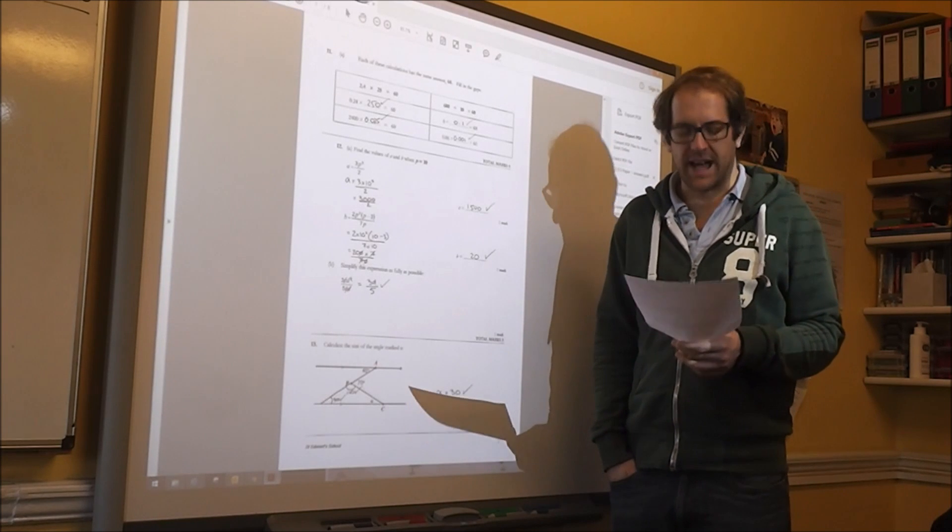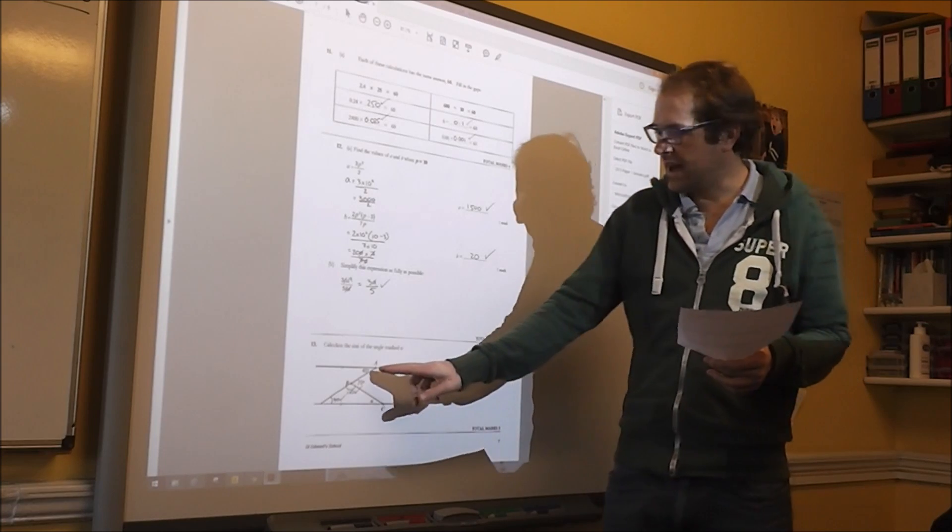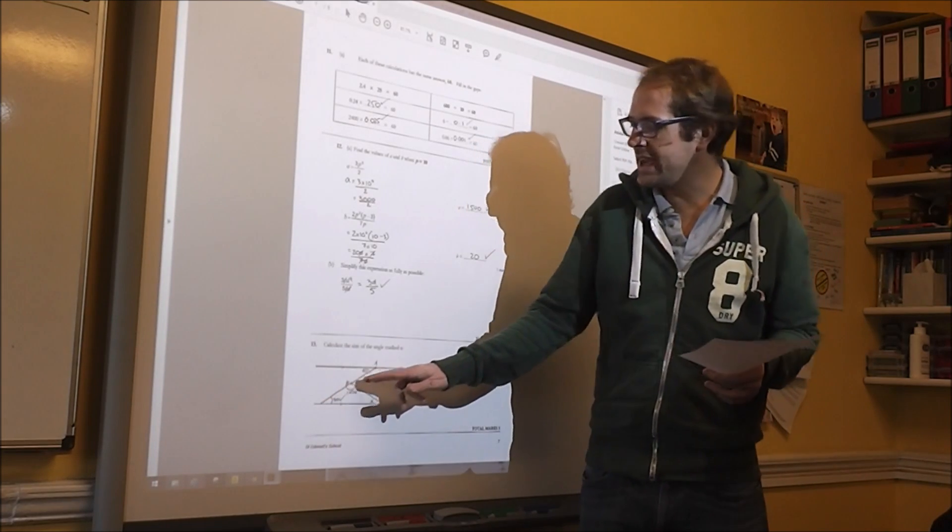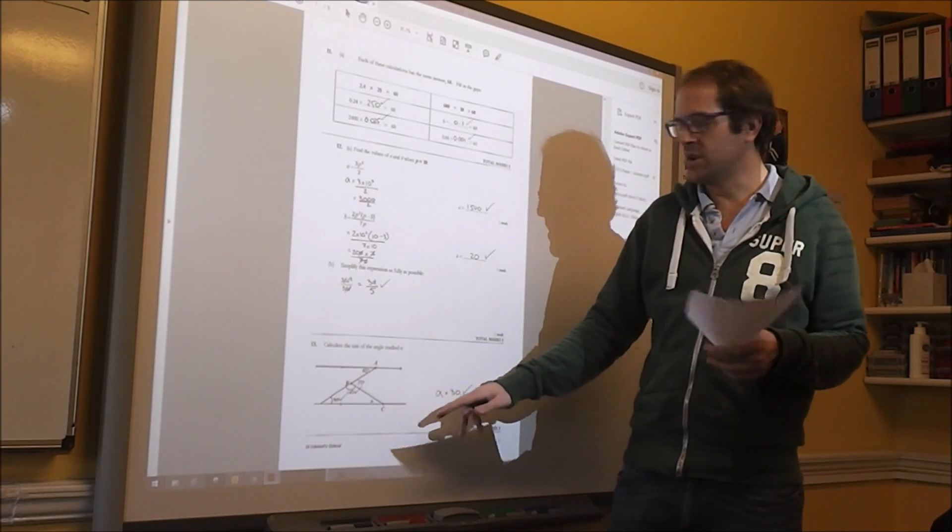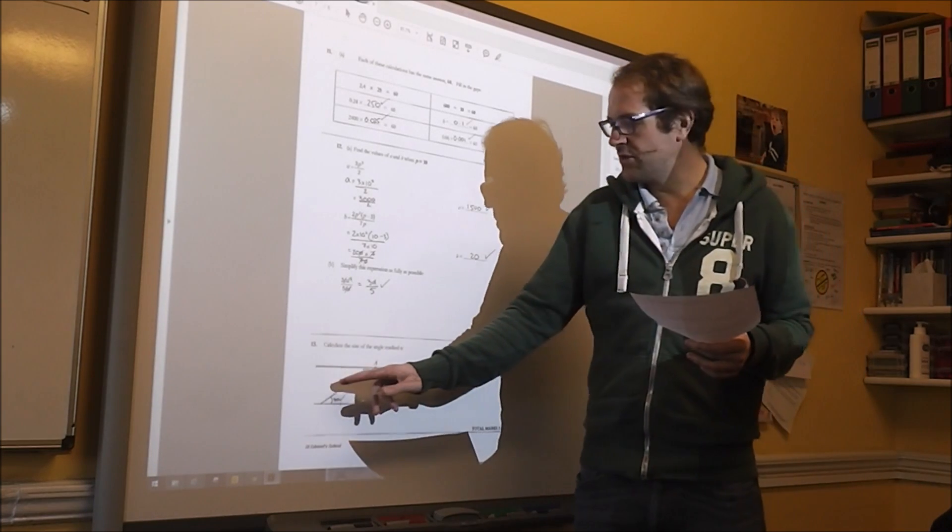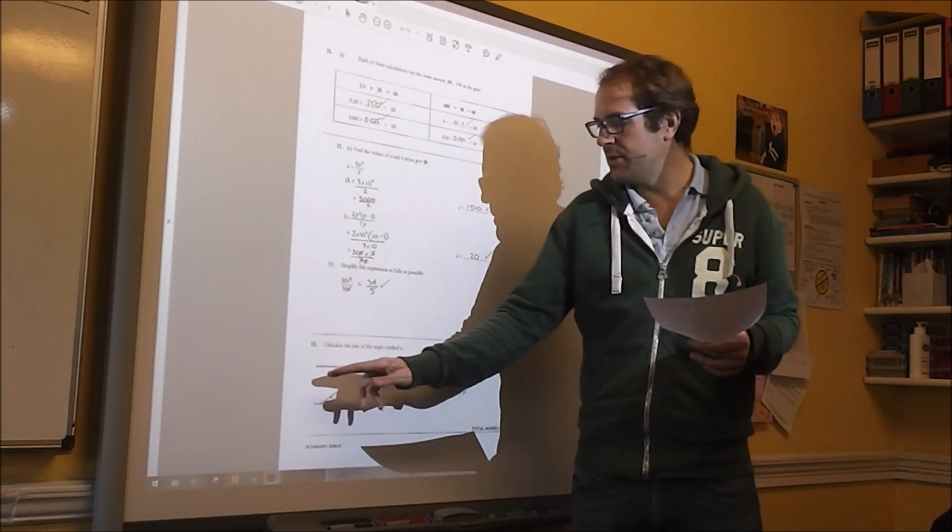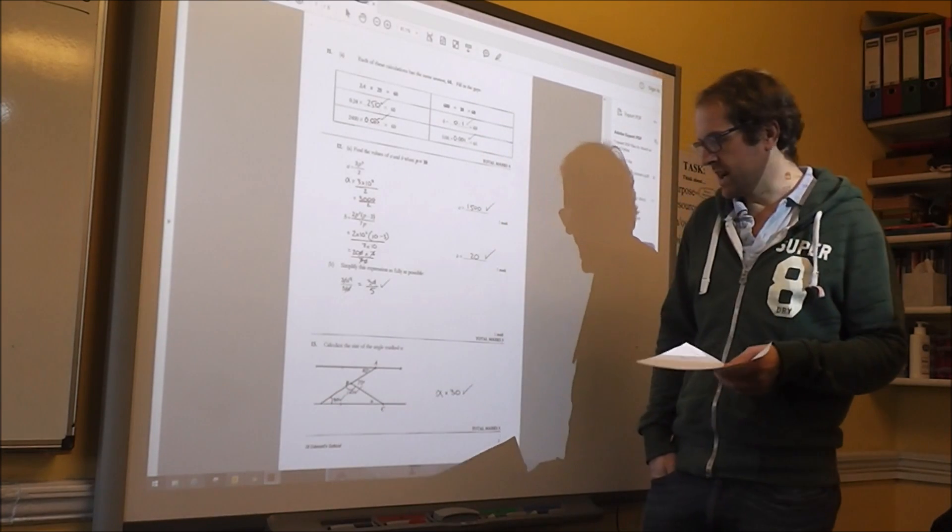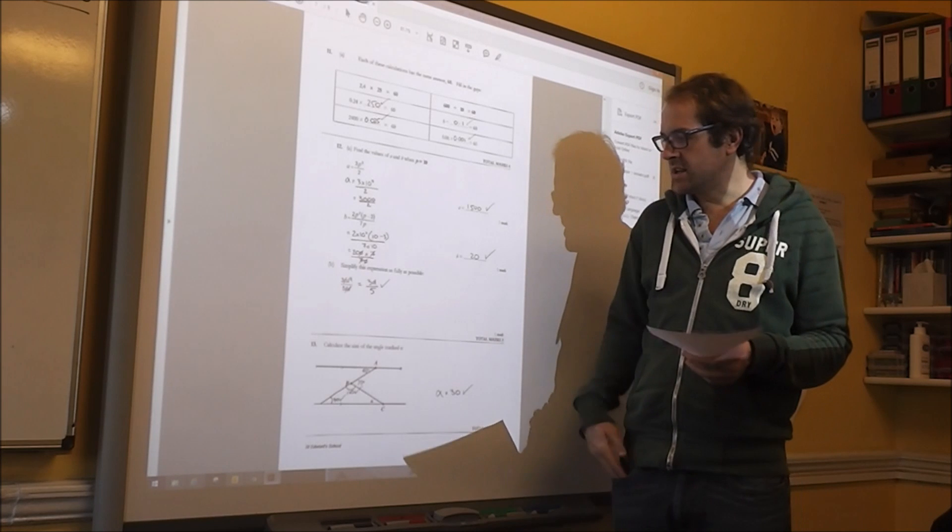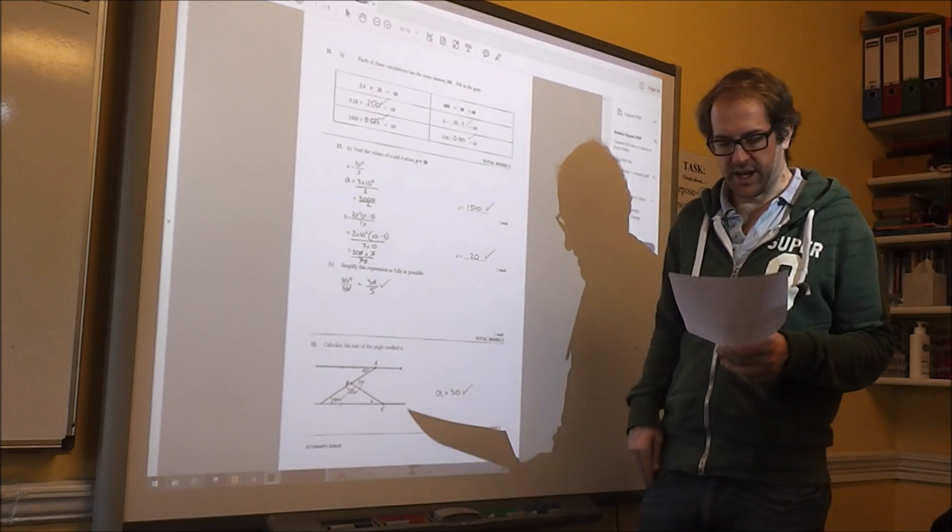Question 13 is a nice little angle question. I continued this line AB to create a triangle here. You can also split through B with another parallel line, and that's quite useful to work it out. But whichever way you do it, A is 30.